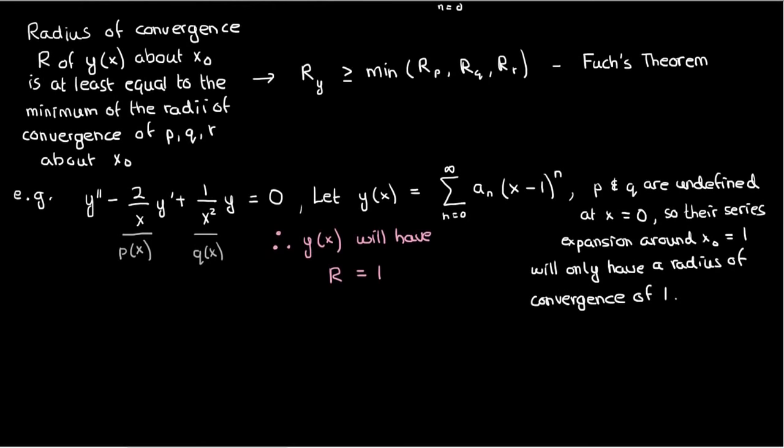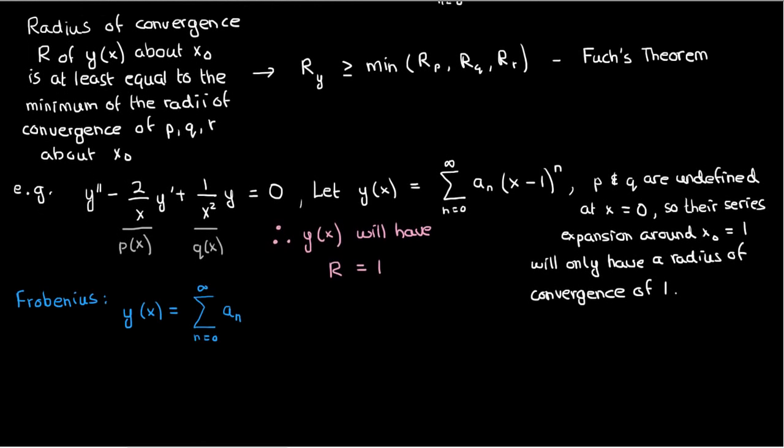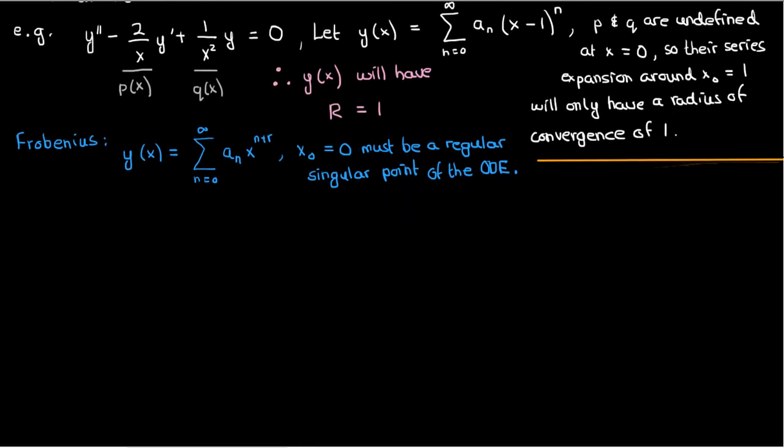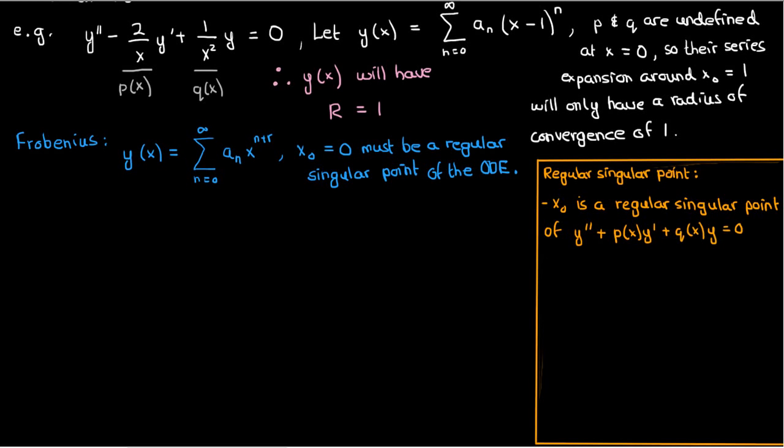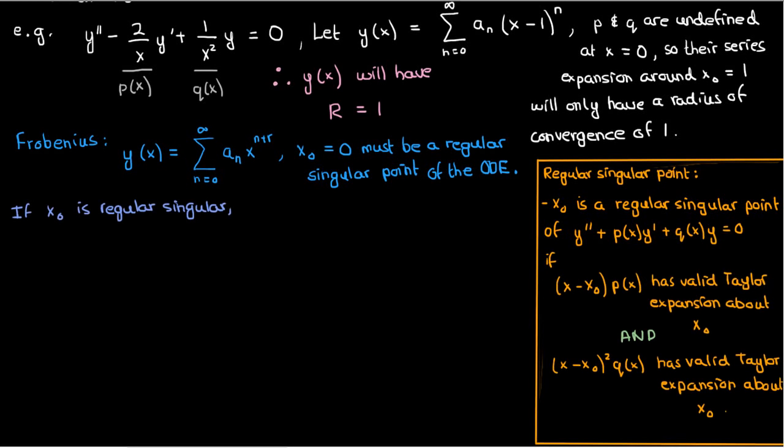On the other hand, if I use Frobenius' method, I can still have my solution be a power series about x = 0, where p and q are both undefined, as long as x₀ = 0 is a regular singular point of the ODE. And that's where I get into the difference between something being a little undefined and something being very undefined. Now what do I mean by a regular singular point? Here's what I mean. x₀ is a regular singular point of the ODE y'' + p(x)y' + q(x)y = 0 if (x - x₀)p(x) has a valid Taylor expansion about x = x₀, and (x - x₀)²q(x) has a valid Taylor expansion about x₀. If x₀ is regular singular, then we can use Frobenius' method, with a series solution centered at x₀.